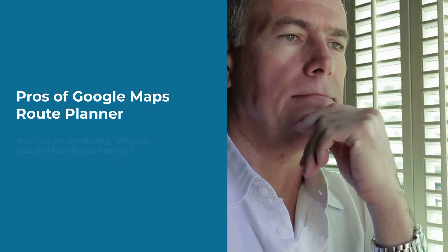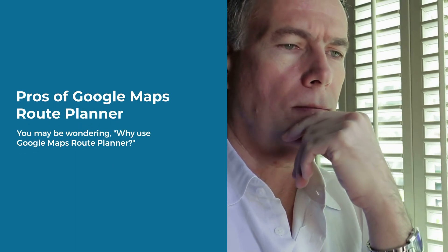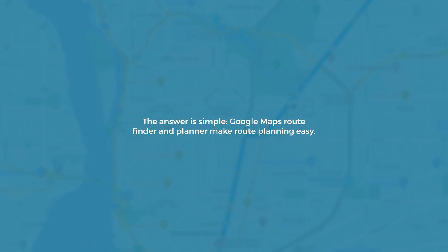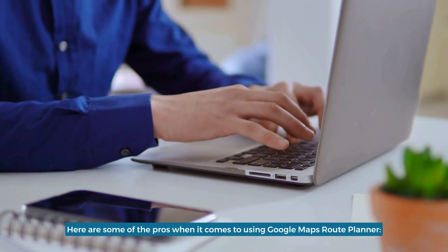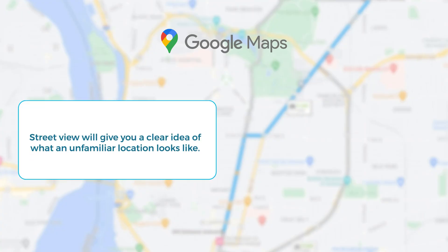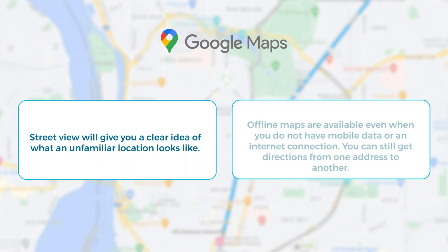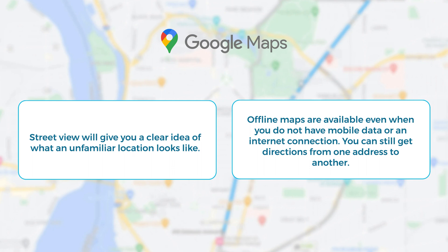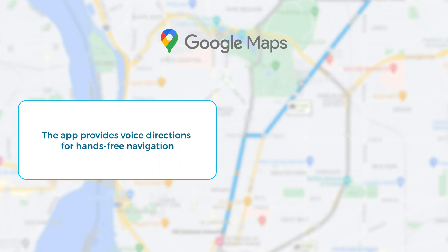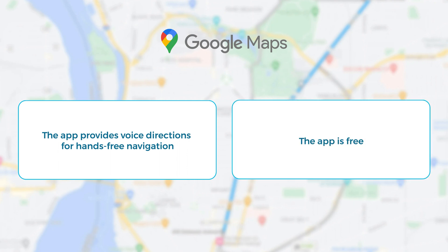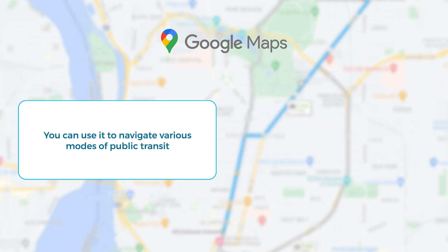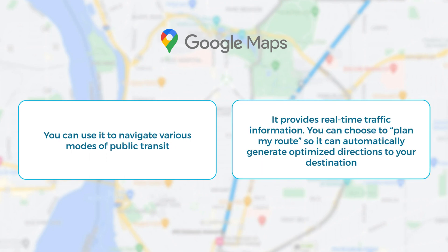Pros of Google Maps Route Planner: Google Maps Route Finder and Planner make route planning easy. Street View will give you a clear idea of what an unfamiliar location looks like. Offline maps are available even when you do not have mobile data or an internet connection, so you can still get directions. The app provides voice directions for hands-free navigation, is free to use, and can be used to navigate various modes of public transit. It provides real-time traffic information and can automatically generate optimized directions to your destination.